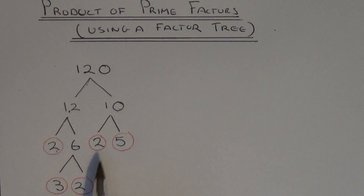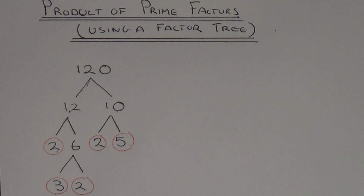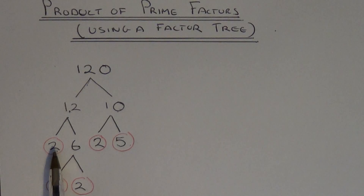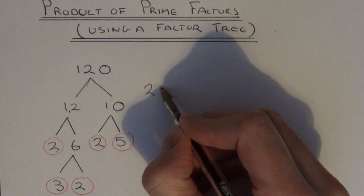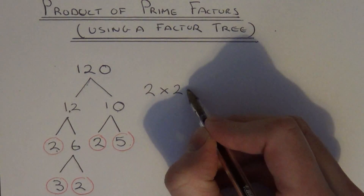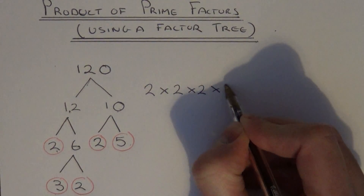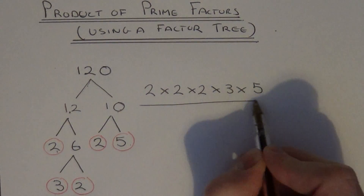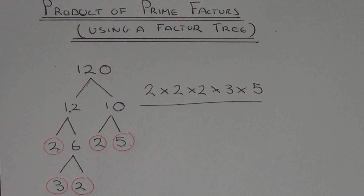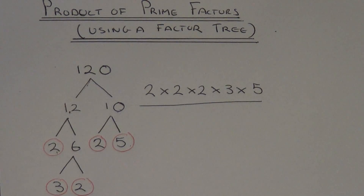All these numbers which I've circled are prime factors of 120. Now the question asks you to write down the product of prime factors, so what you need to do is write all these prime factors down and insert multiplication signs between the prime factors. This is known as the product of prime factors — if you multiply all these numbers together it gives you 120, which is the number at the top of the factor tree.